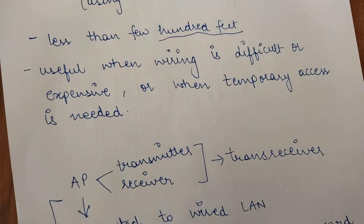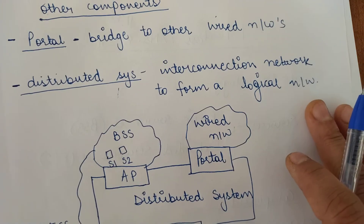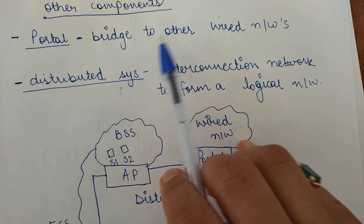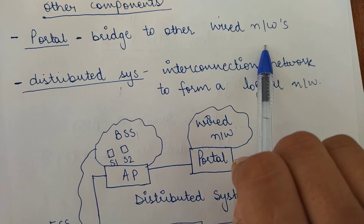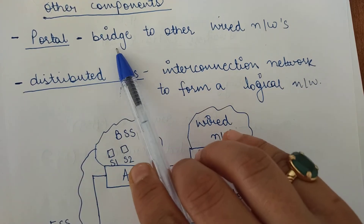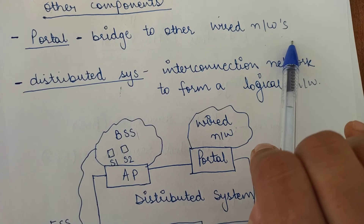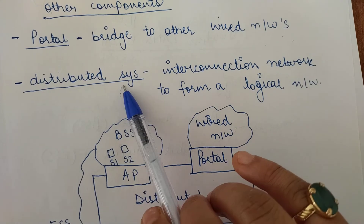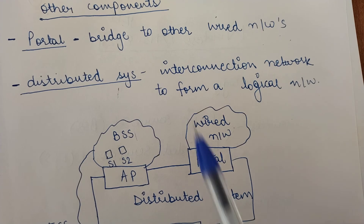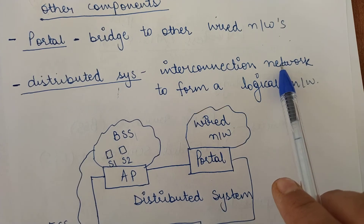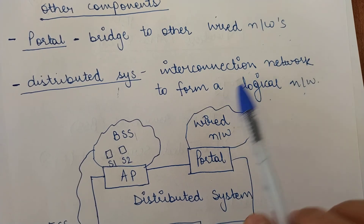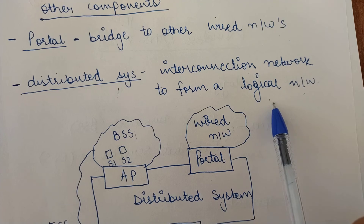Looking at the other components of a wireless LAN, there is a portal. A portal is a bridge to other wired networks. Since access points are connected to the wired LANs, the portal bridges to all other wired networks. There is also a distributed system — an interconnection network to form a logical network, meaning an interconnection among several different networks which form a logical network.